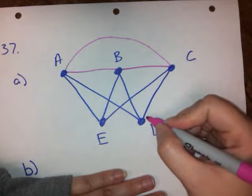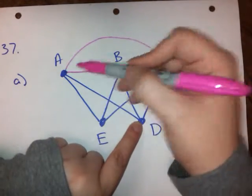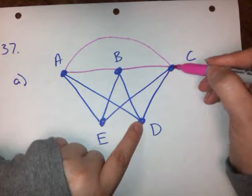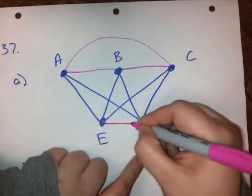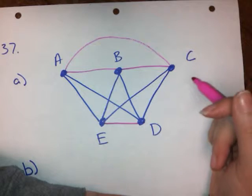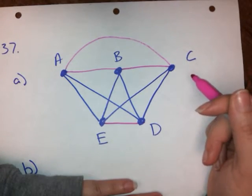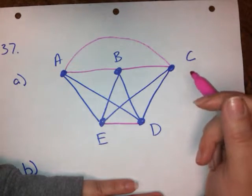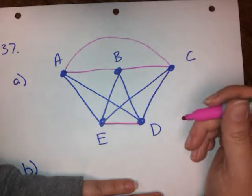D, D needs to be adjacent to A, it is, it's adjacent to B, it's adjacent to C, needs to be adjacent to E, and E is now adjacent to everything. So we've added in the edges that we need to make this a complete graph.